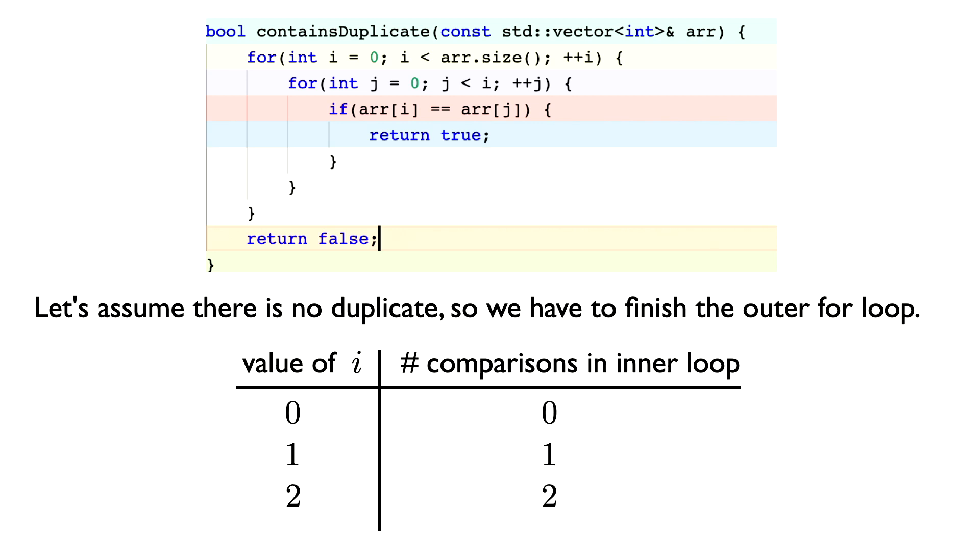So for the analysis, let's say that there's no duplicate in the input. This is the worst case for this algorithm, because in this case the outer for loop is going to have to run until completion. So let's look at how many comparisons we do in the inner loop, depending on the value of the variable i of the outer loop.